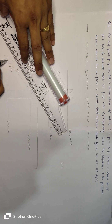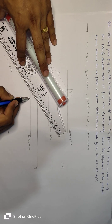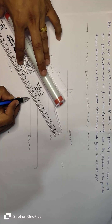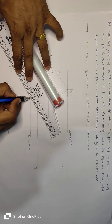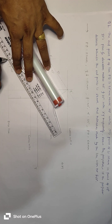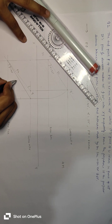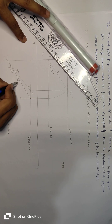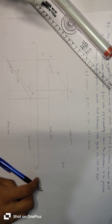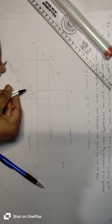This is the starting point of our true length and plan length. This is the end point of true length. So this length is the true length in top view.